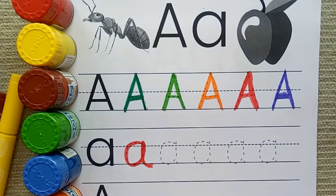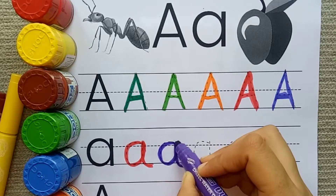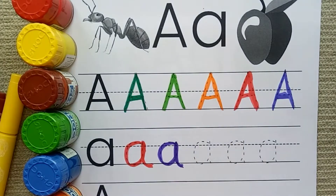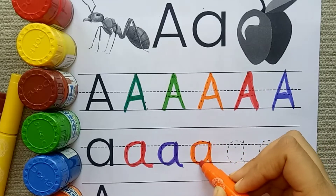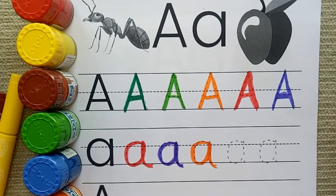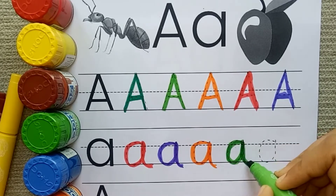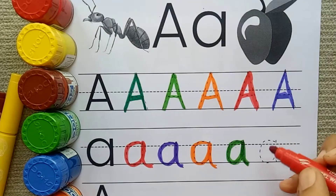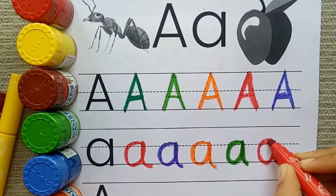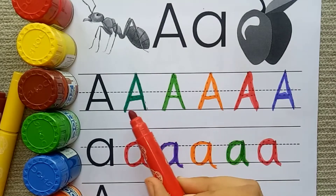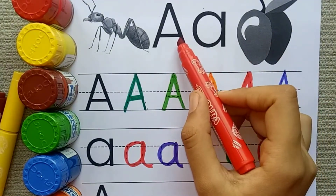E for apple — blue color. E for aunt — orange color. E for apple — green color. E for aunt. Red color — E for apple. Capital letter E, small letter E. E for apple, E for aunt.